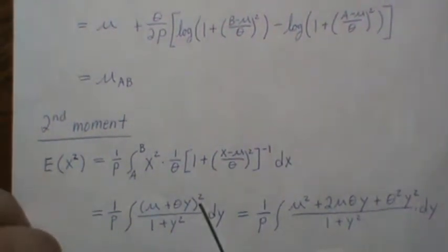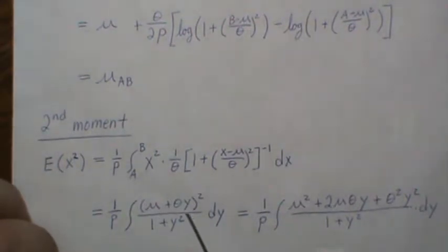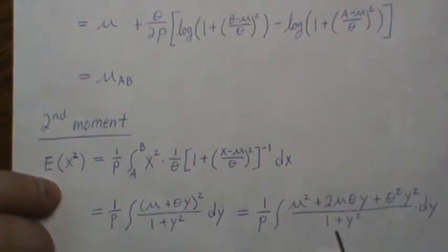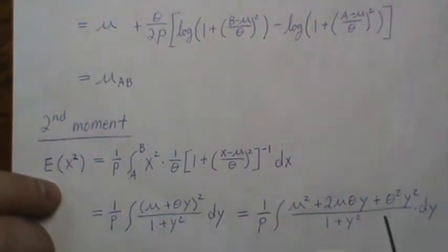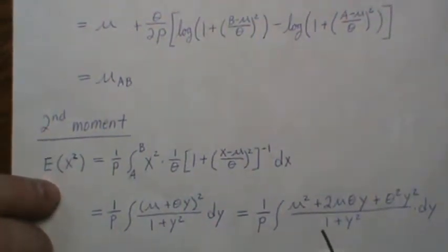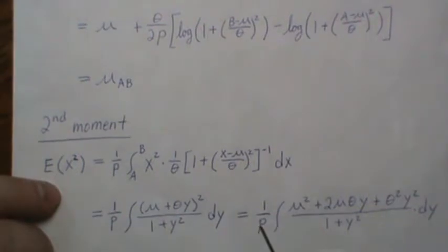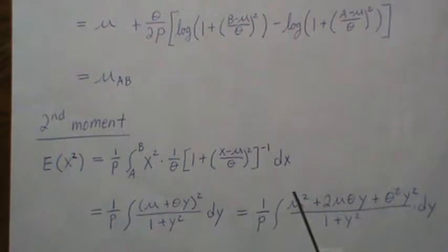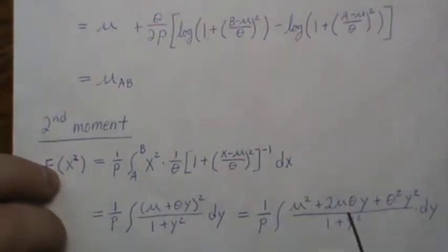Then to evaluate this, we're going to expand that. So it's going to be mu squared, 2 mu theta Y, plus theta squared Y squared. And then we're going to evaluate three integrals. Well, this first part is sort of a no-brainer because everything's constant, and the P comes in because it's part of the density, integrates to 1, and we're just left with mu squared.